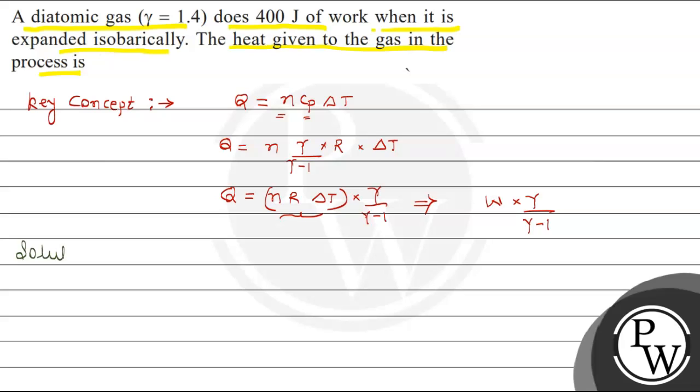So this is a diatomic gas, therefore gamma value is given as 1.4. And therefore, Q is 400 given, that's the value of W. 400 J of W into gamma that is 1.4 divided by 1.4 minus 1.